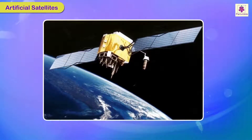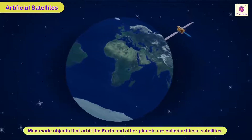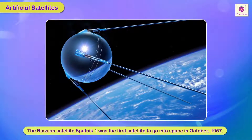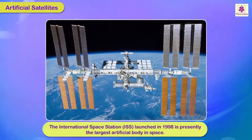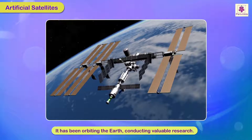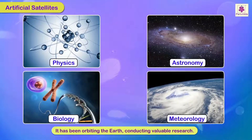Artificial Satellites. Man-made objects that orbit the Earth and other planets are called Artificial Satellites. The Russian satellite Sputnik-1 was the first satellite to go into space in October 1957. The International Space Station (ISS), launched in 1998, is presently the largest artificial body in space. It has been orbiting the Earth ever since, conducting valuable research in physics, astronomy, biology, and meteorology.